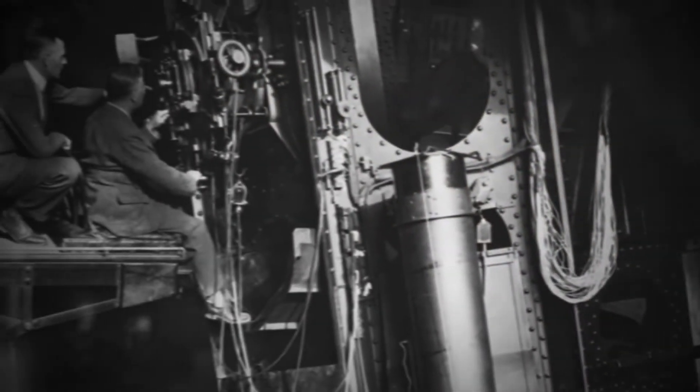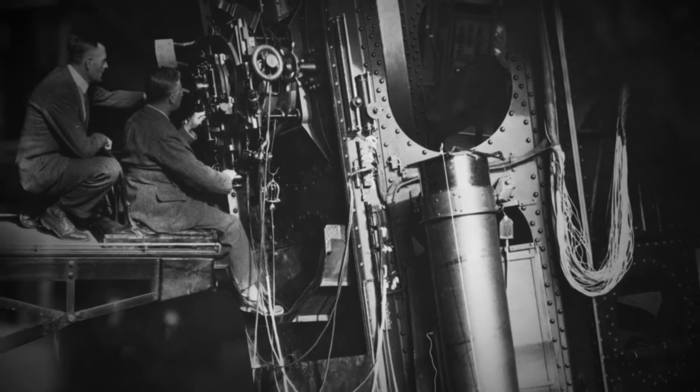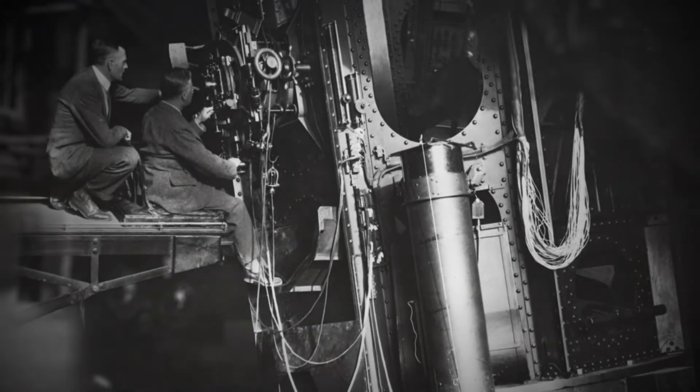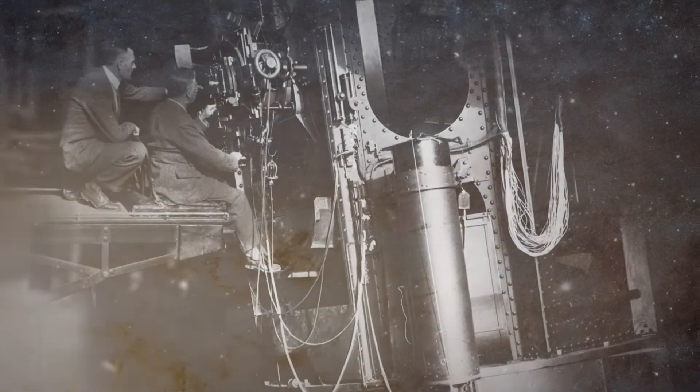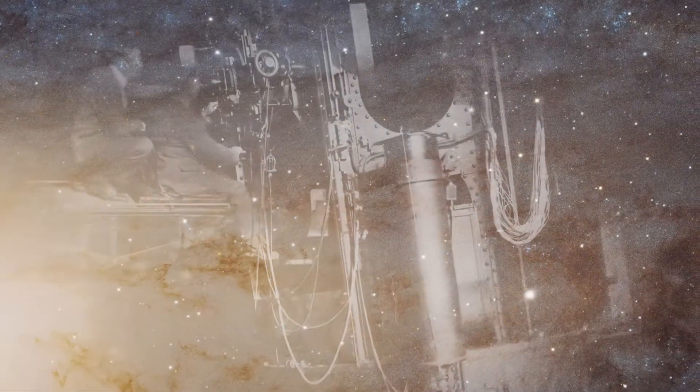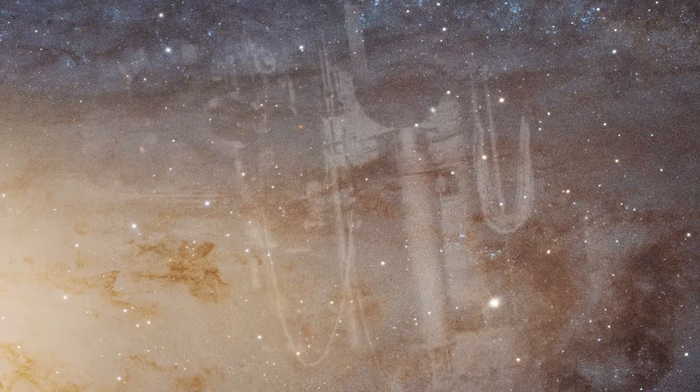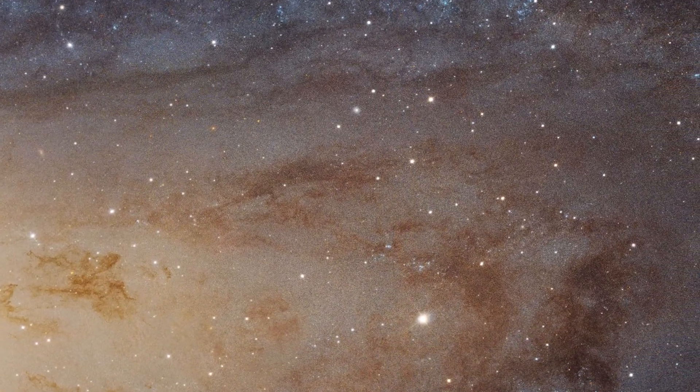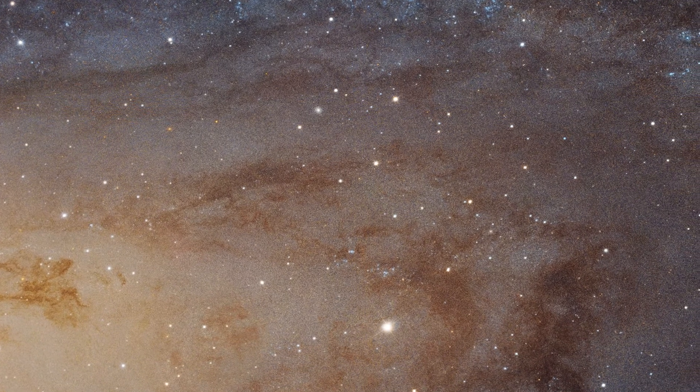This only changed in 1924, in the year that Edwin Hubble identified variable stars in several spiral nebulae. He used these stars to calculate the distances to these nebulae.